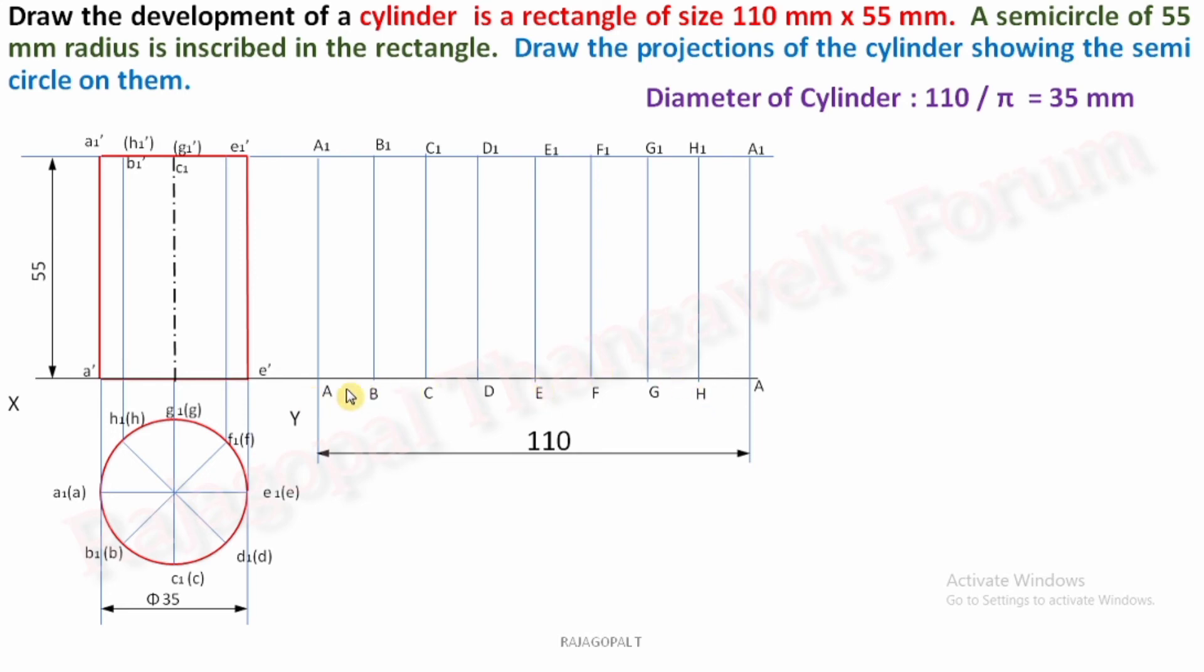So you can take the very center division a b c d. So totally we are having nine vertical lines. Take the fifth line E. Fifth division E. E as center, this A as a radius, almost you will get same 55 or we can take E as a center, E1 as radius. What about E and E1 length? It is 55, that is what given in our question. Semicircle of 55 mm radius, E as center, E1 as radius, draw a semicircle.